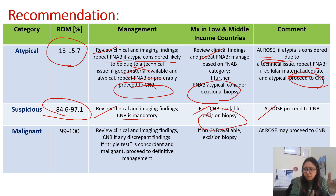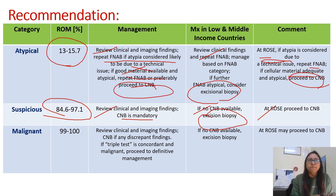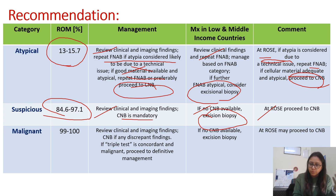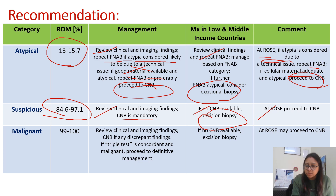At ROSE for the suspicious category, while doing FNA we perform MGG staining and assess cellularity so we don't have to call the patient back. We make the smear, stain it, and check immediately whether cells are present. If adequate cellularity is confirmed, the patient can leave and the report will be complete. If inadequate, we repeat in the same setting — up to three times under USG guidance if needed — and then proceed to core needle biopsy.